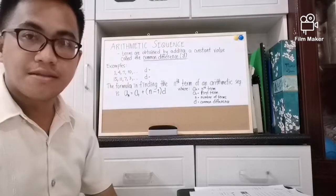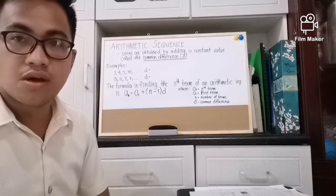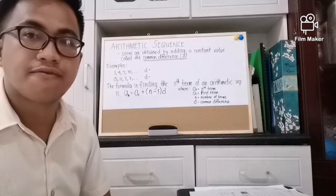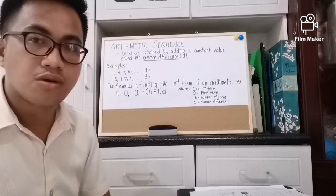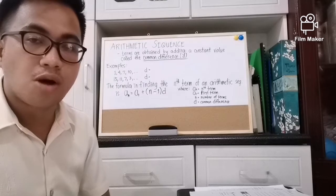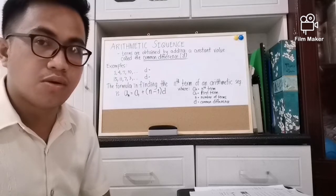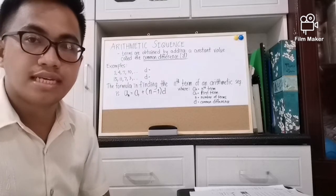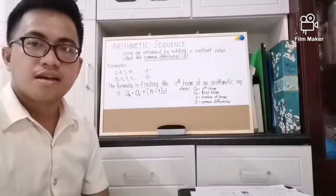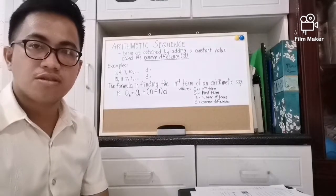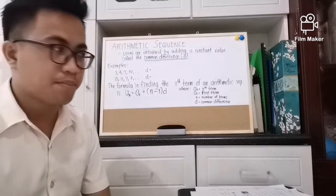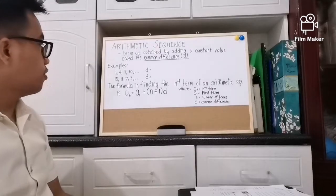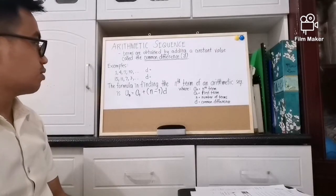Arithmetic sequence is a sequence where terms are obtained by adding a constant value called the common difference, which is denoted by the lowercase letter d. Now let's go on to the examples.